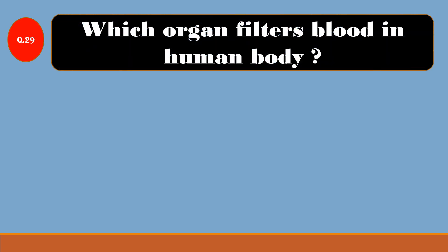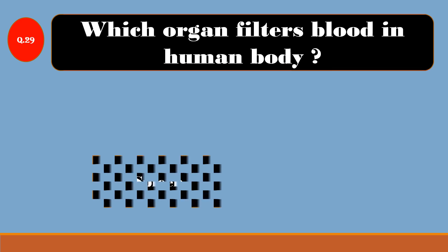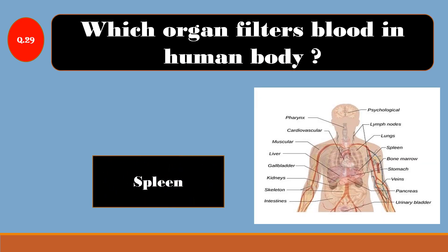Question No. 29: Which organ filters blood in the human body? Answer is spleen.